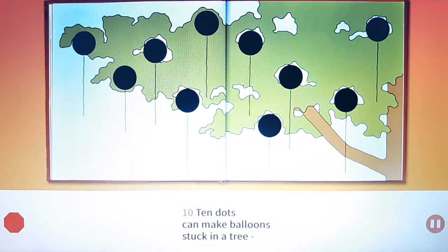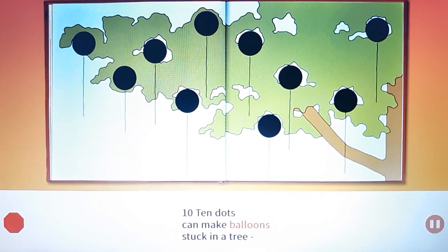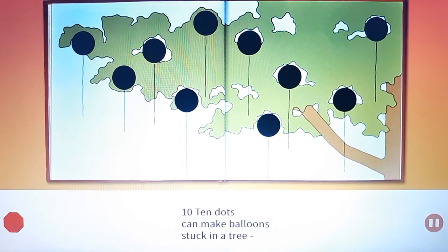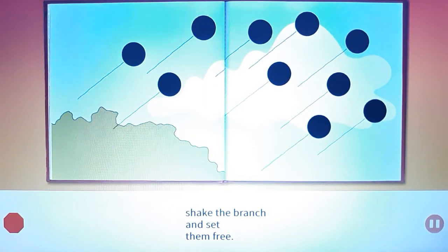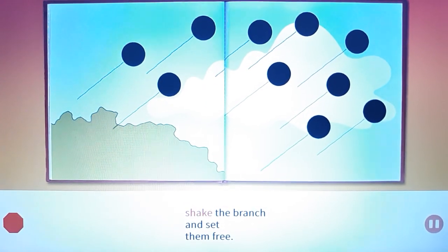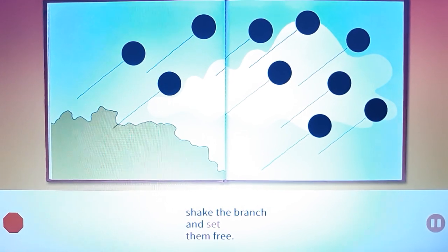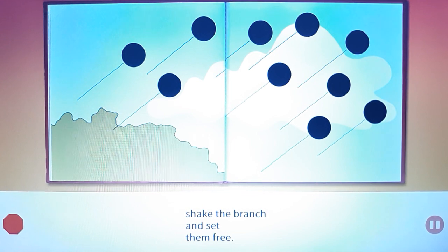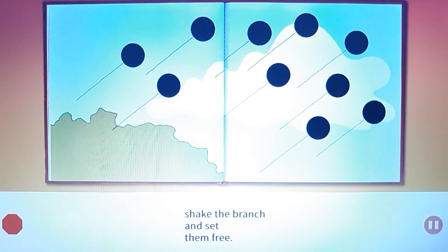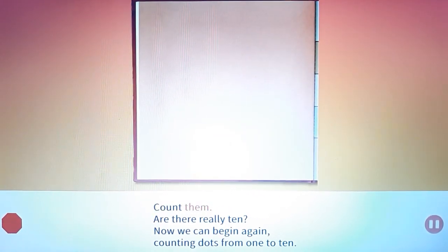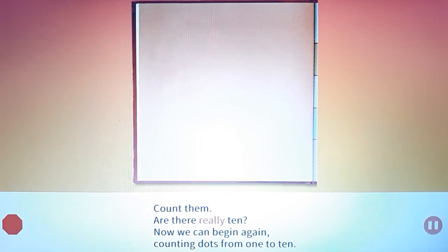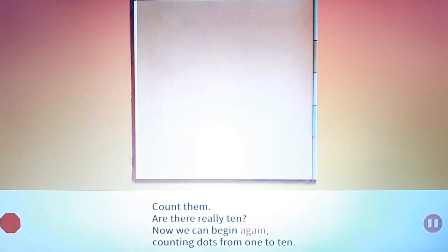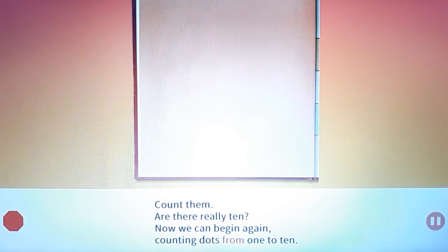Ten. Ten dots can make balloons stuck in a tree. Shake the branch and set them free. Count them. Are there really 10? Now we can begin again, counting dots from 1 to 10.